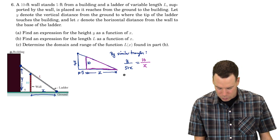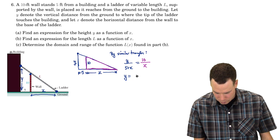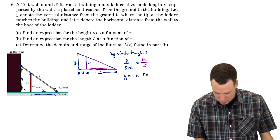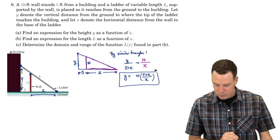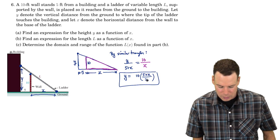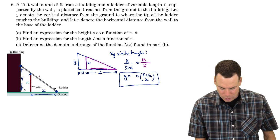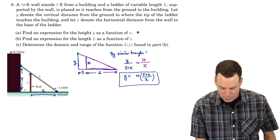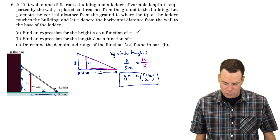So there's my relationship between X and Y. So I can solve for Y and I get that Y is equal to 10 times (5 + X) over X. So there's my expression for the height of Y as a function of X.